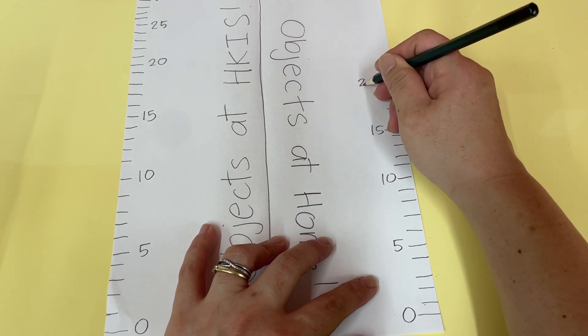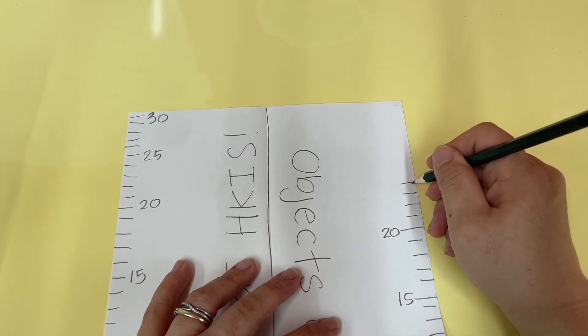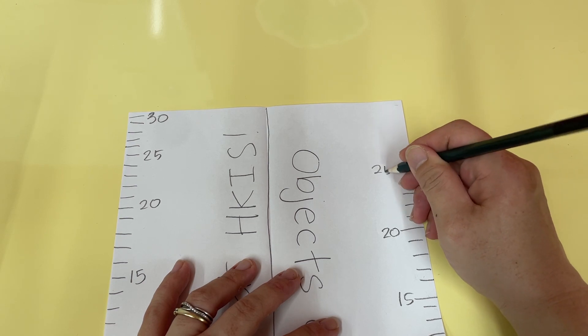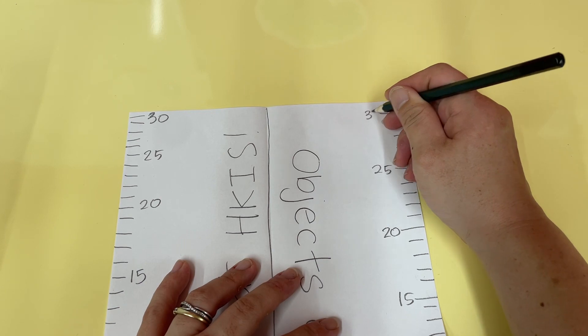20, 21, 22, 23, 24, 25, 26, 27, 28, 29, 30. Okay?